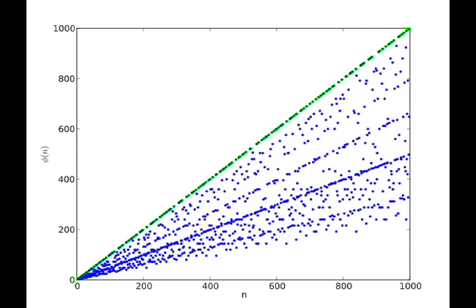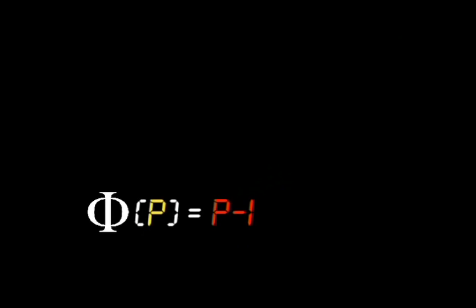The straight line of points along the top represent all the prime numbers. Since prime numbers have no factors greater than 1, the phi of any prime number p is simply p minus 1.